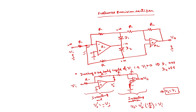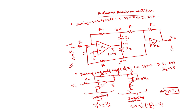Now what happens during the negative half cycle, that is V_i is negative? V_i is negative, so V_0 dash from the first amplifier will be positive because it is an inverting amplifier. For diode D1, anode is negative and cathode is positive — D1 is off. For diode D2, anode is positive and cathode is negative — D2 is on. Therefore D1 is off and D2 is on. For ideal diodes: D1 acts as open circuit, D2 acts as short circuit.